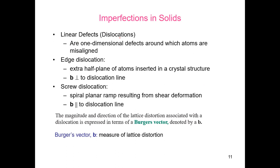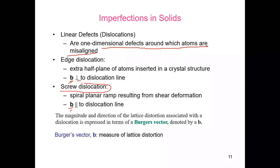A linear defect is a one-dimensional defect around which atoms are misaligned. For edge dislocation, the Burgers vector is perpendicular to the dislocation line. For screw dislocation, the Burgers vector is parallel to the dislocation line.